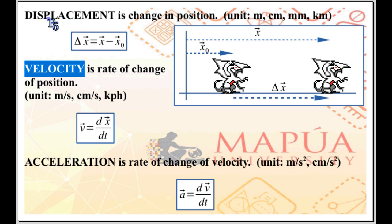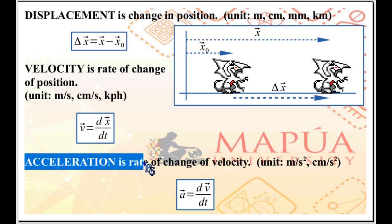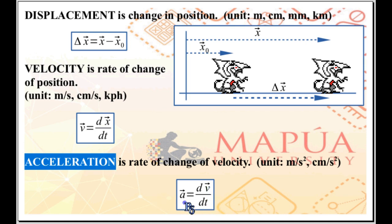If the position of the object is changing, we have how fast the position is changing — velocity. We also have how fast the velocity is changing — the acceleration of the object, which is the rate of change of velocity. If velocity is dx/dt, then acceleration is dv/dt: a equals dv/dt, a very small change in velocity divided by a very small change in time, or the differentiation of velocity with respect to time.